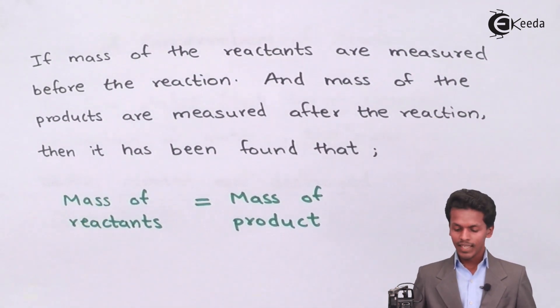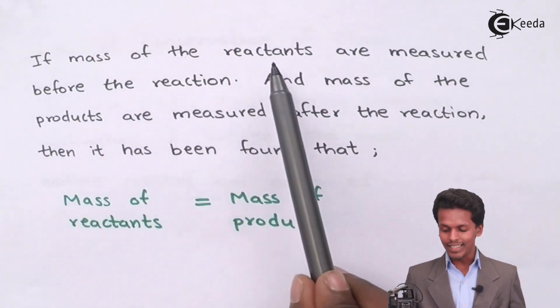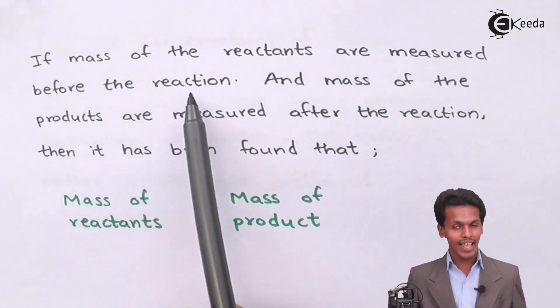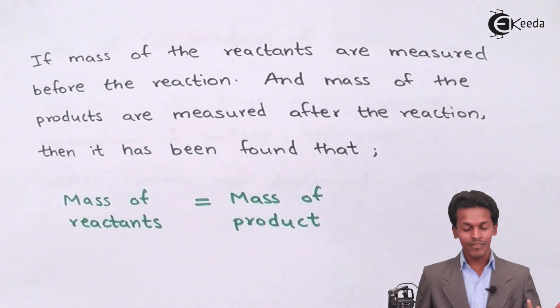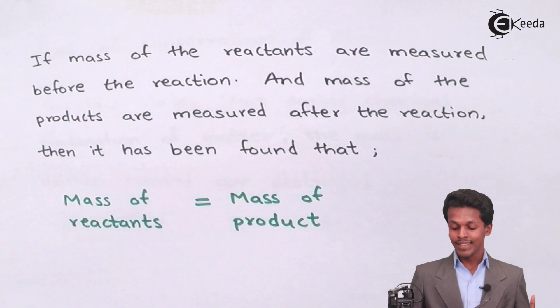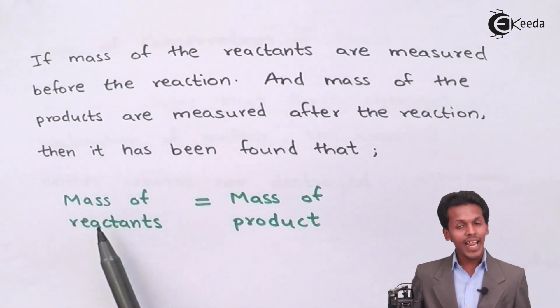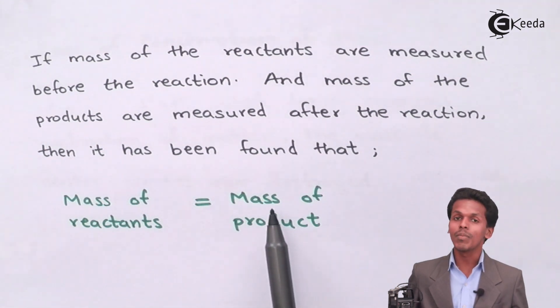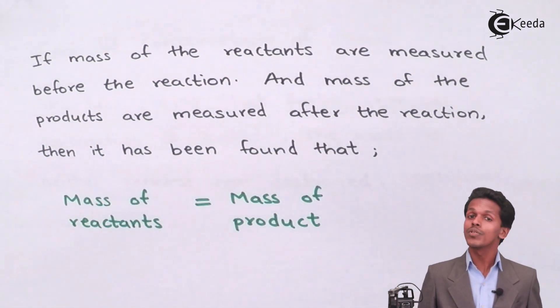If the mass of reactants is measured before the reaction and the mass of products is measured after the reaction, it is found that the mass of reactants equals the mass of products produced.